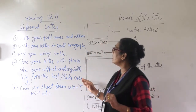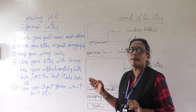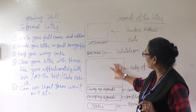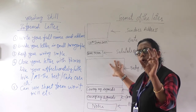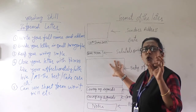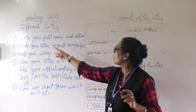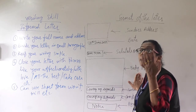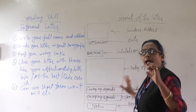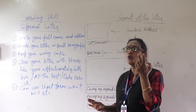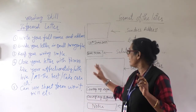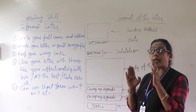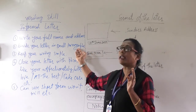Divide your letter into small paragraphs. See, these are the paragraphs — here is the body of the letter. In the body of the letter, add two or three small paragraphs. For the purpose you are writing, divide it — hardly two or three lines in one paragraph. Like this, seven or eight lines you can write in the body of the letter, divided into paragraphs, written very clearly.